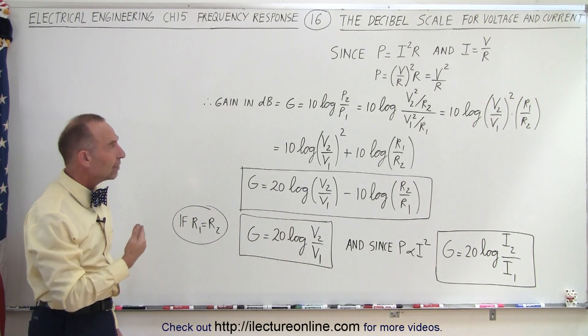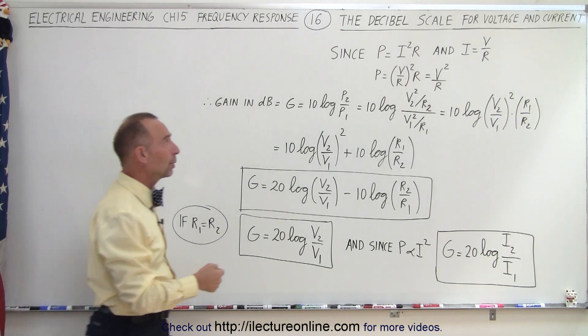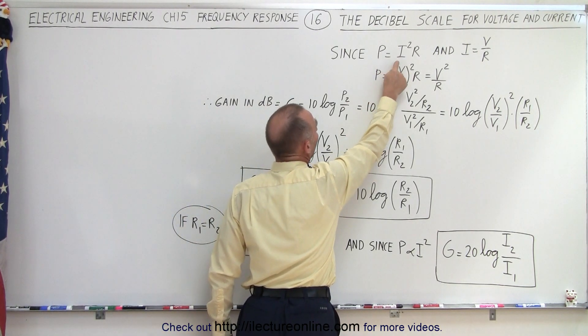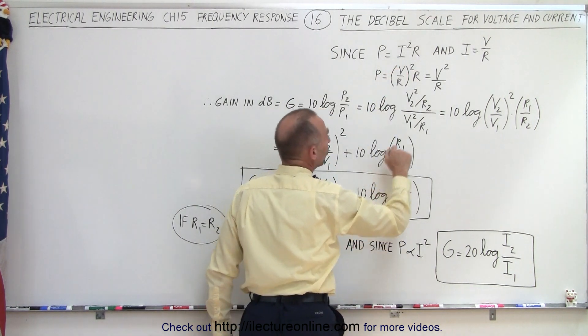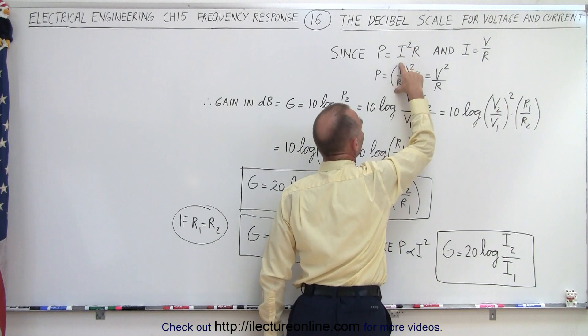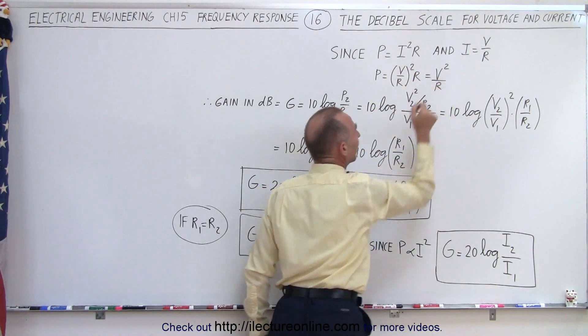But how do we calculate the gain in decibels for voltage or current? Well, we know that the relationship between power and current can be equated that P equals I squared times R. And from Ohm's law, since I equals V over R, when we replace I by V over R and we have the quantity squared, power then becomes V squared divided by R.